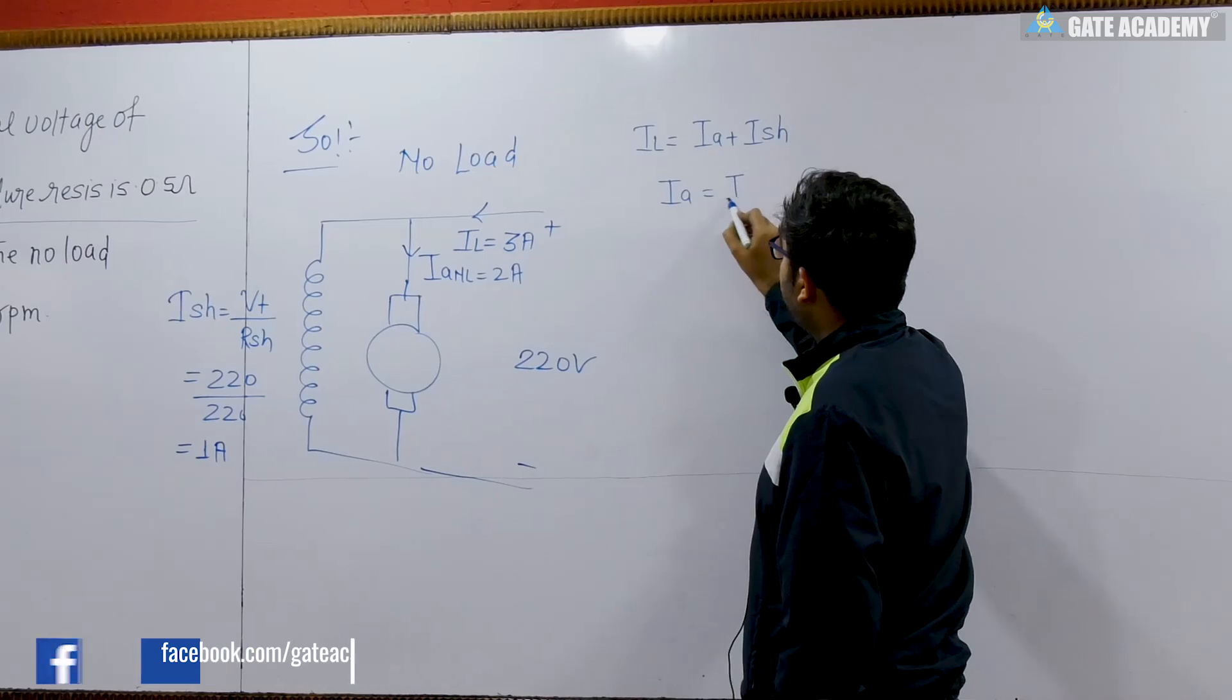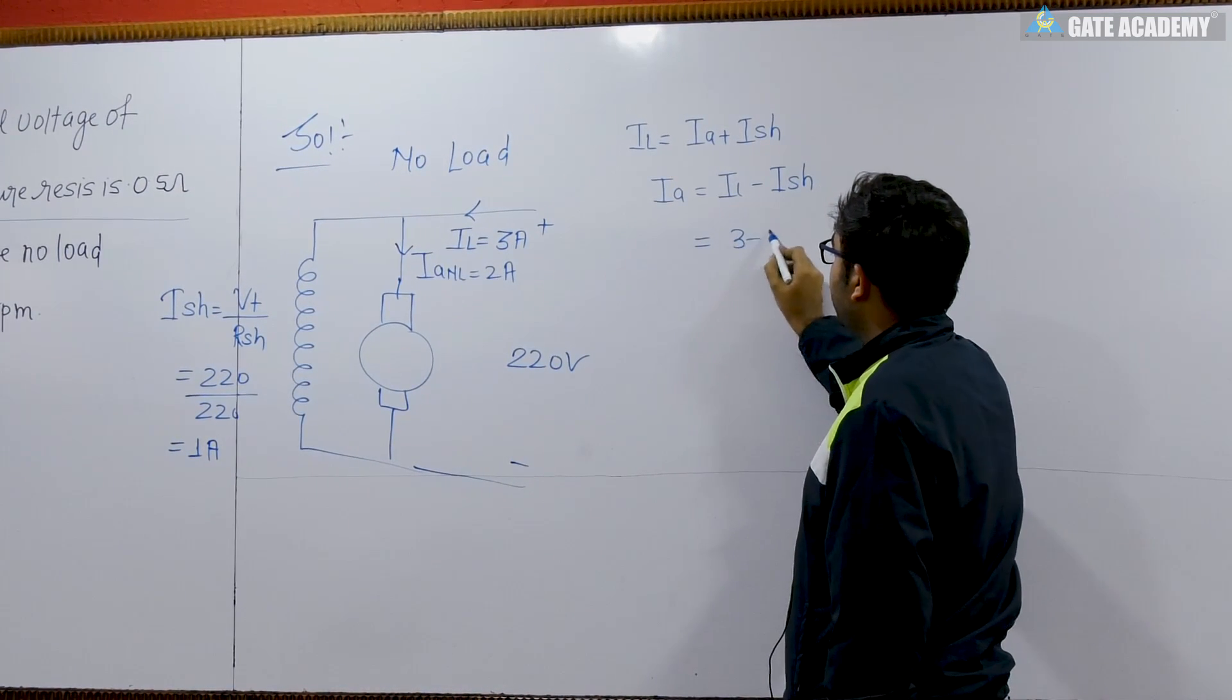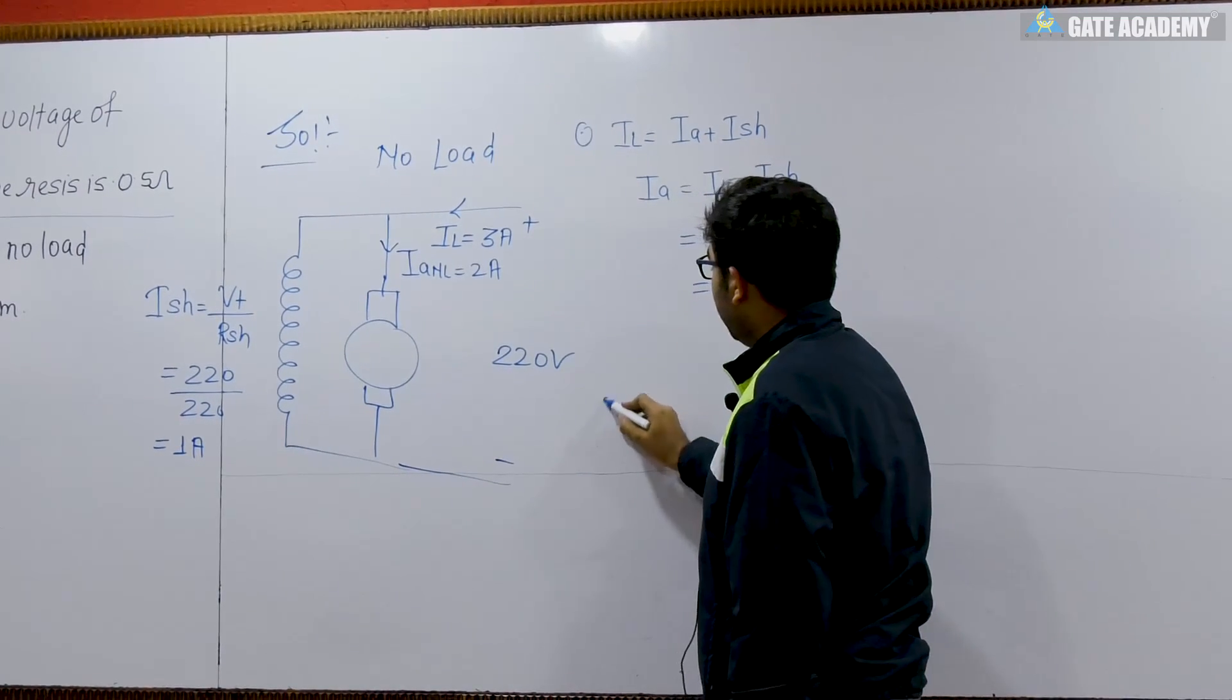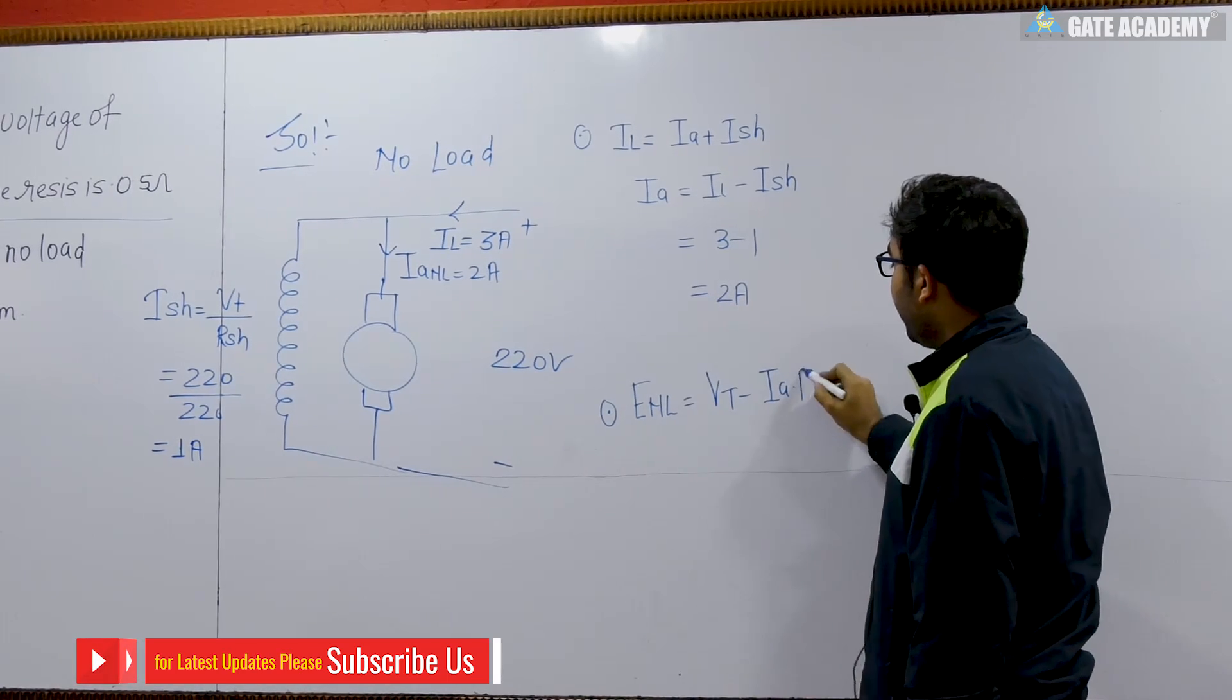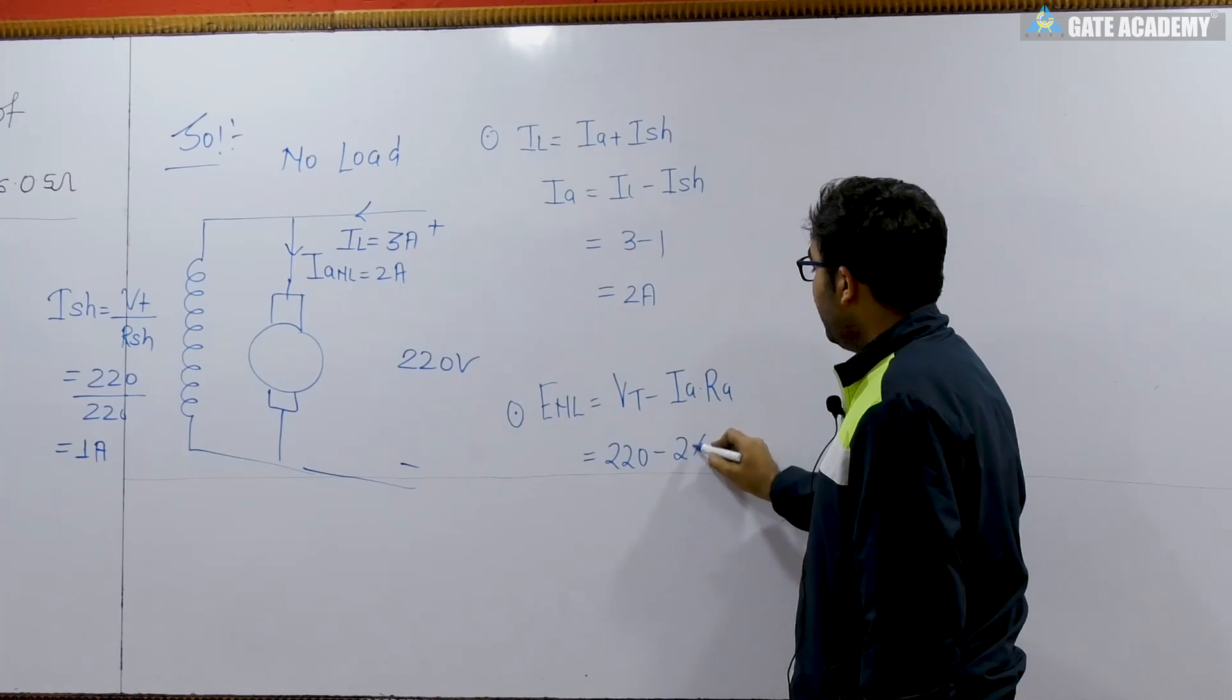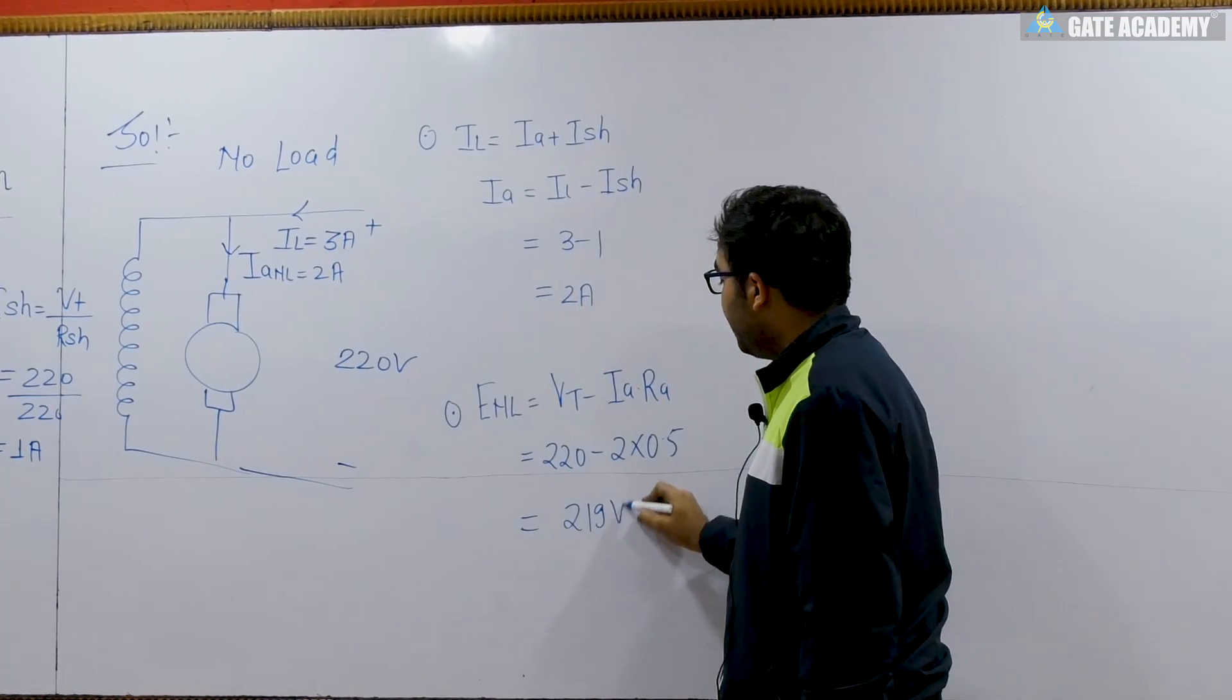So the armature current drawn by the motor is IL minus Ish, so it will equal 3 minus 1, 2 ampere. First point. Second, the value of no load induced EMF will be equal to Vt minus Ia into Ra.